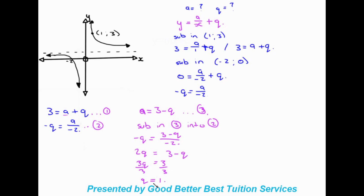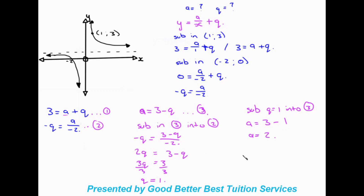Now that we have q, we substitute q is equal to one into equation three: a is equal to three minus one, so a is equal to two. With both unknowns found, we write out our final equation: y is equal to two over x plus one.